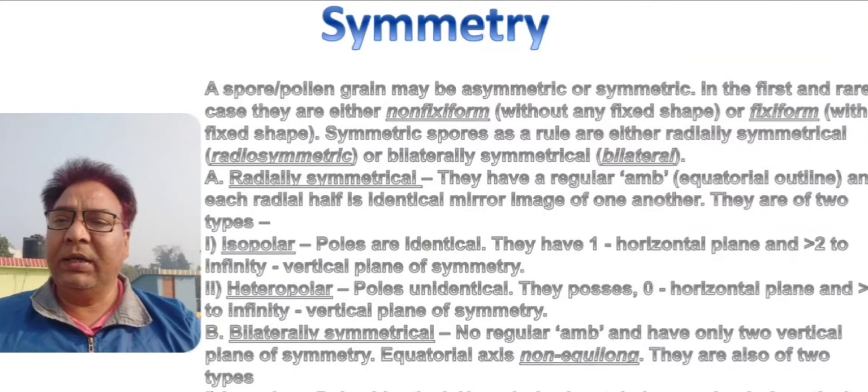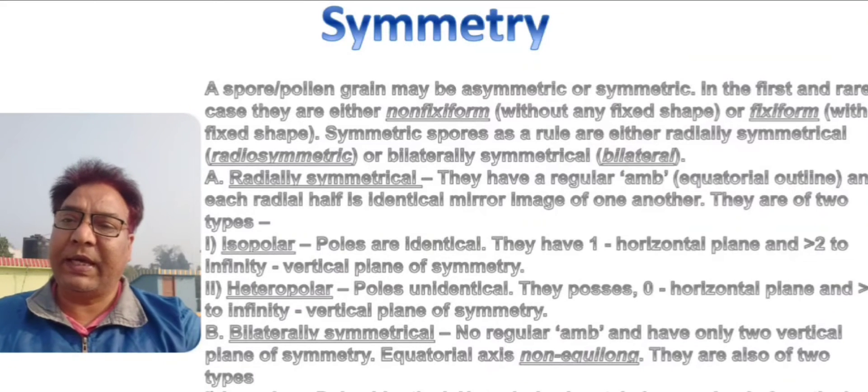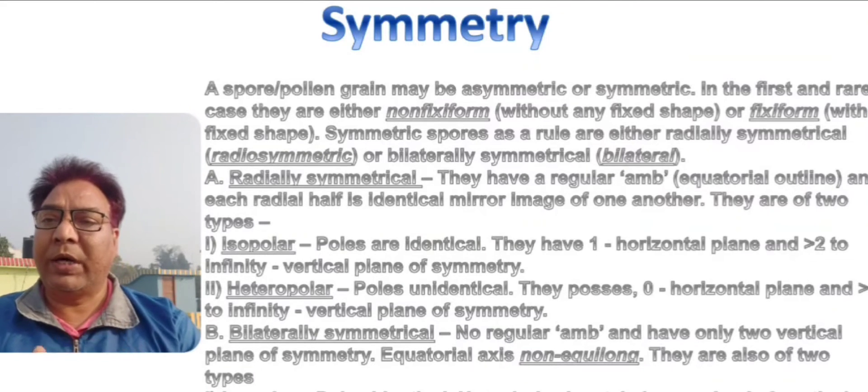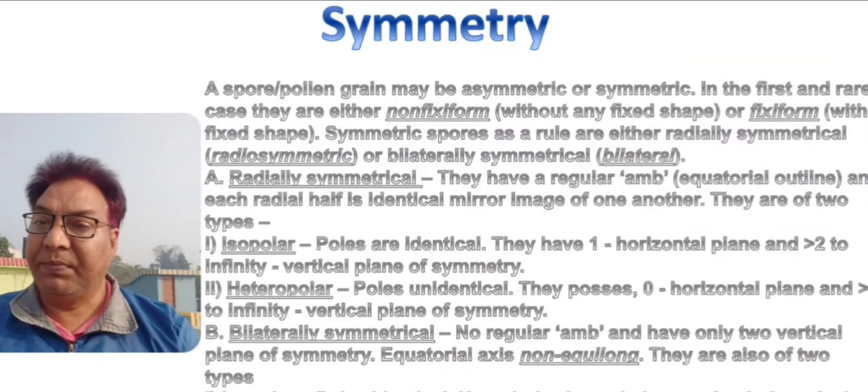A radial symmetrical spore might be isopolar or heteropolar. If it is isopolar, it will have one horizontal plane of division. If it is heteropolar, there will be zero horizontal plane of division.